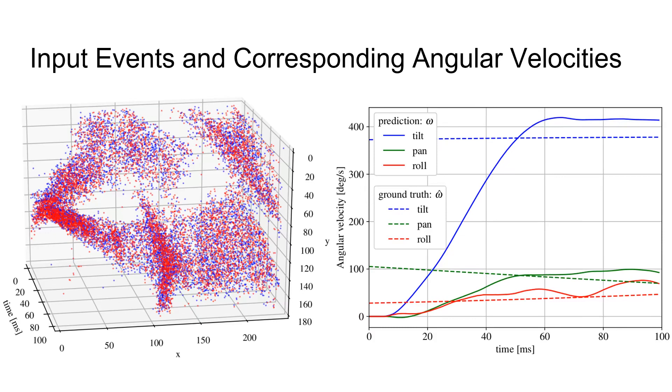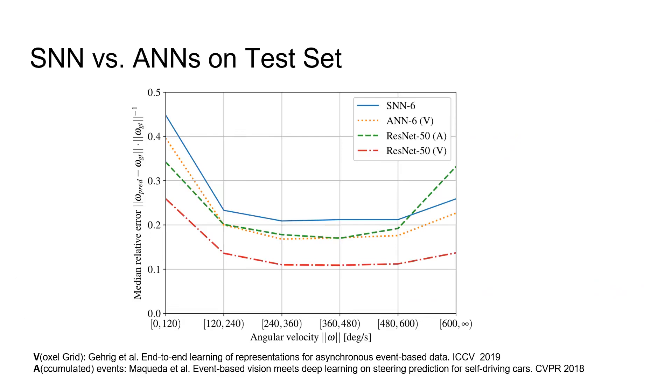This plot shows the median relative error of the SNN and three competing artificial neural networks. Note that the SNN continuously predicts, while the ANNs predict in a discrete fashion every 20 milliseconds. The six-layer SNN in blue achieves competitive performance with respect to similar six-layer ANN using a voxel-based input.